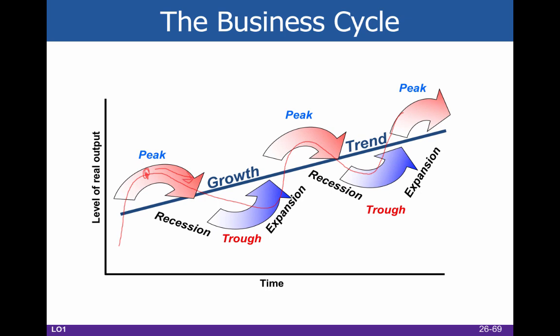This is called a recession — though I generally call it contraction, because a recession is a specific thing with a specific definition, which is two consecutive quarters of shrinking GDP. After the economy contracts for a while, it will hit its bottom, which we call the trough. That's where it basically can't go anywhere — it just stops going down and then it starts to recover.